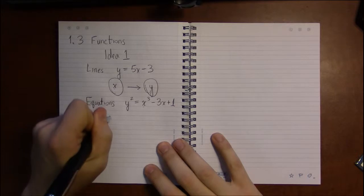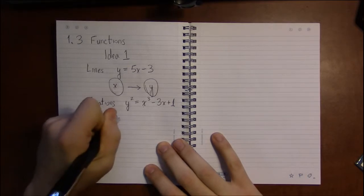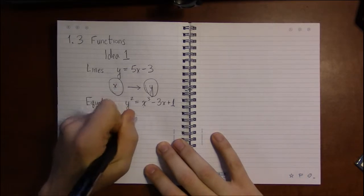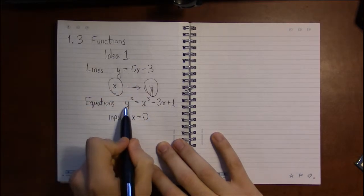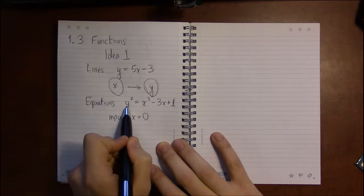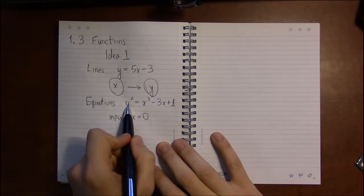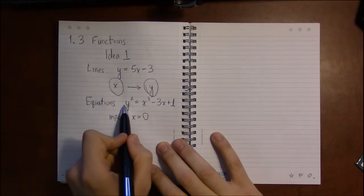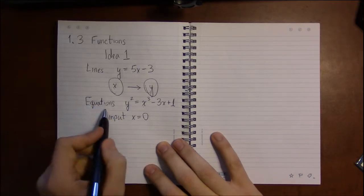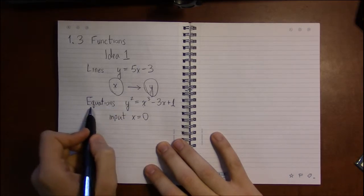For example, if we take the input x equals zero, in order for this to be a function there's only one possible value that y could have. If y could have more than one value, this equation, while perfectly fine, is not a function. So let's take a look at this if we plug x equals zero in.